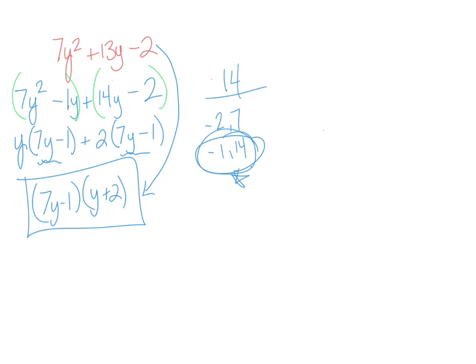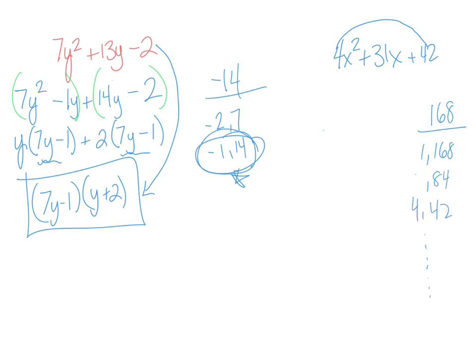The downside of the AC method: if you look back at 4x squared plus 31x plus 42, multiplying A times C gives 168. You'd have to sit and find all the factors of 168 — 1 and 168, 2 and 84, 4 and 42, and so on. That's where the AC method is not as great, especially with big numbers for A and C. But it's another option. Your directions may ask you to use a particular method, but honestly, use whichever one works best for you.